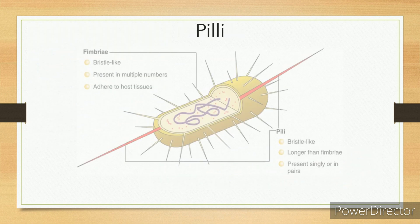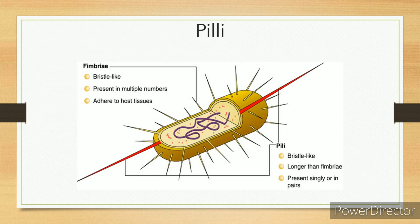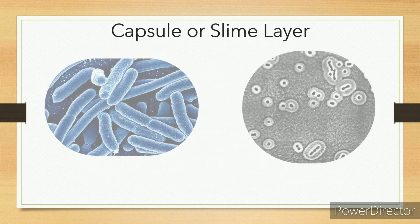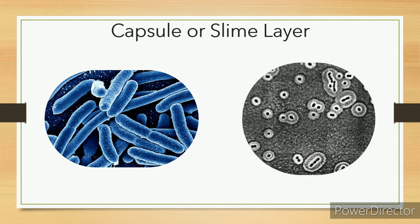Pili. Short protein appendages smaller than flagella. Adhere bacteria to surfaces. Antibodies will block adherence. F-pilus used in conjugation. Exchange of genetic information. Flotation increases buoyancy. Pellicles come on water. More oxygen on surface.